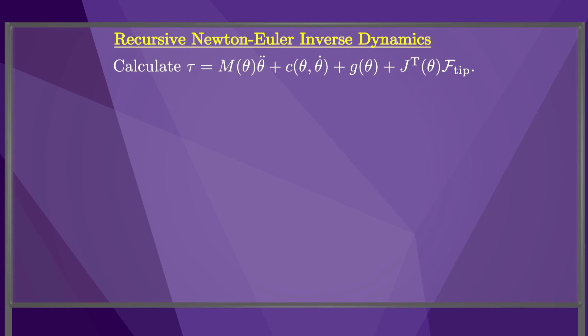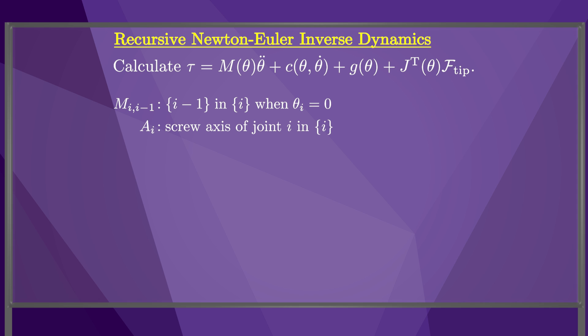Formally, the recursive Newton-Euler inverse dynamics algorithm calculates tau given the joint positions, velocities, and accelerations, as well as the wrench f-tip that the robot end-effector applies to the environment. We define M_{i,i-1} to be the transform defining frame i-1 relative to frame i when joint i is at its zero position. We define A_i to be the screw axis of joint i expressed in frame i. We define the wrench f_{n+1} to be the wrench f-tip applied by the end-effector.